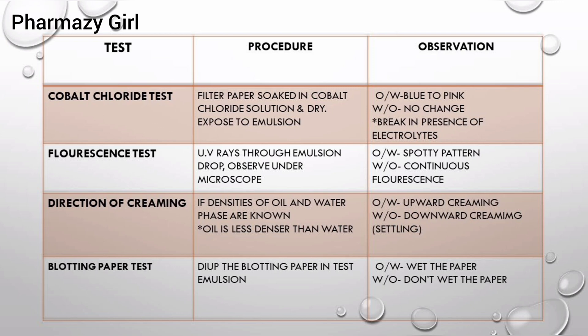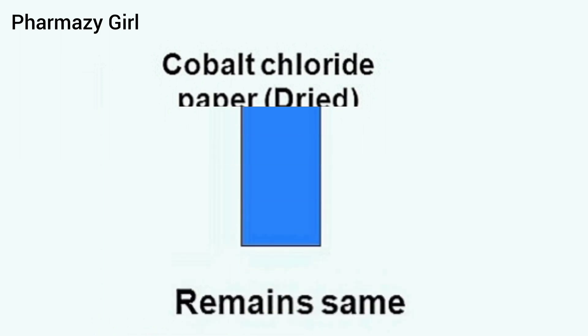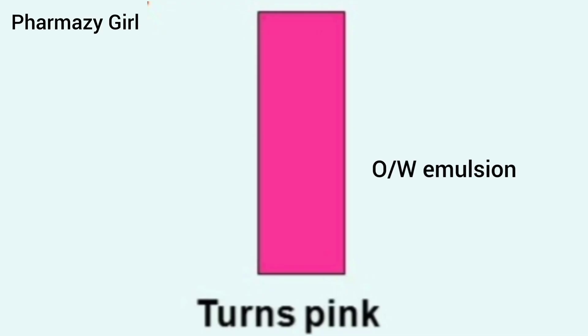The fourth test is the cobalt chloride test. In this test, a filter paper is soaked in cobalt chloride solution and is dried. Then the test emulsion is applied to the paper. If the cobalt chloride paper, which is blue in color, remains the same, then it means the emulsion is water in oil emulsion. But if the paper turns pink in the presence of water, it means it is oil in water emulsion.